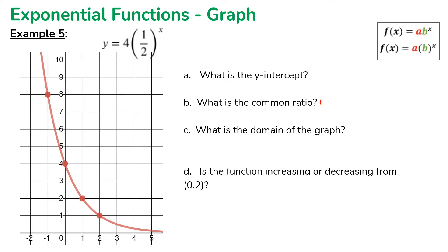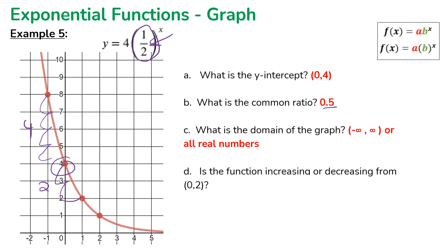Now let's answer questions about this exponential function graph. The y-intercept is at (0, 4). The common ratio is one half, or 0.5 — you can see it in the equation, and from the graph: the y-value goes from 4 to 2, which is multiplied by 0.5. The domain is all real numbers, from negative infinity to positive infinity. From 0 to 2, the function is decreasing because the graph is going down.